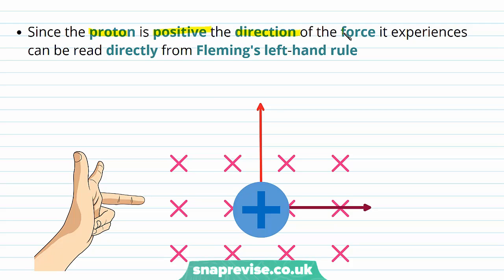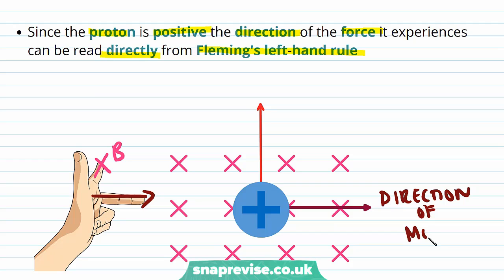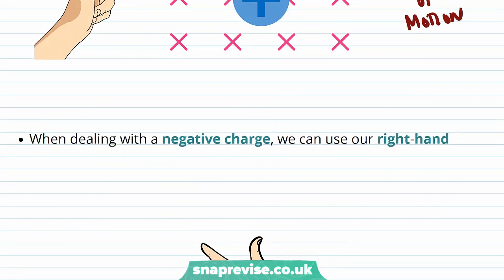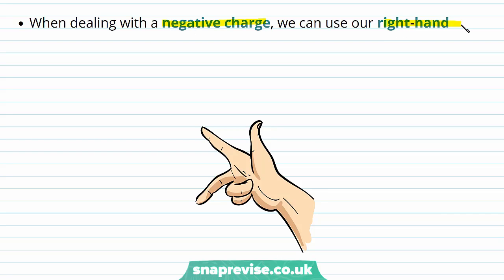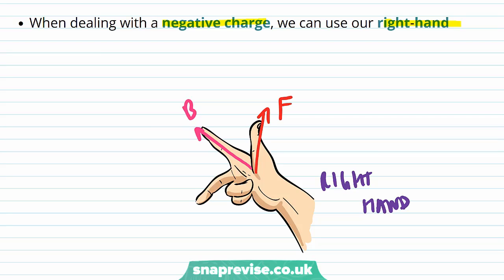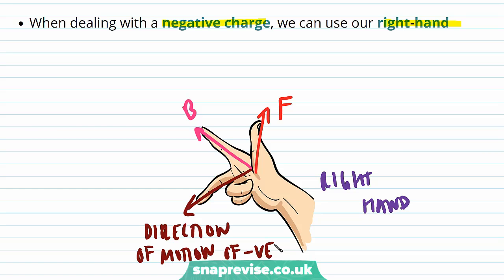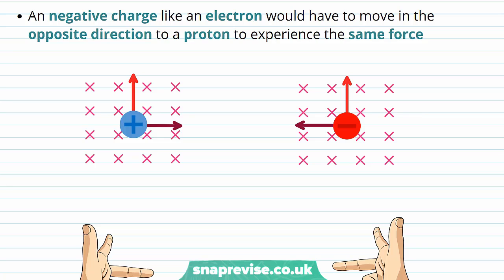Since the proton is positive, the direction of the force it experiences can be read directly from Fleming's left hand rule. The first finger represents the magnetic field into the plane of the page, the direction of motion is given by the second finger pointing from left to right, and the thumb points in the direction of the force which is upwards. When dealing with a negative charge, we can use our right hand. The first finger still points in the direction of the magnetic field, the thumb points in the direction of the force, but the second finger points in the direction of motion of a negative charge. We can never use our right hand when dealing with current, only for motion of negative charges.